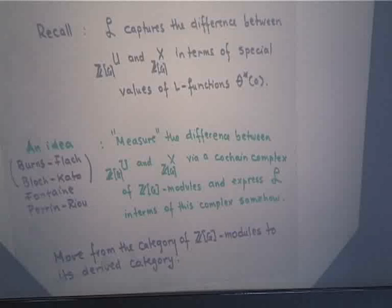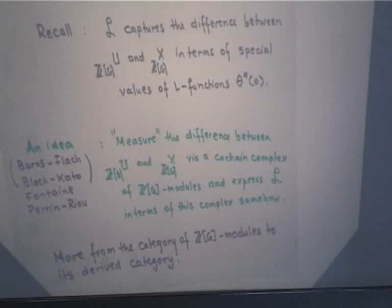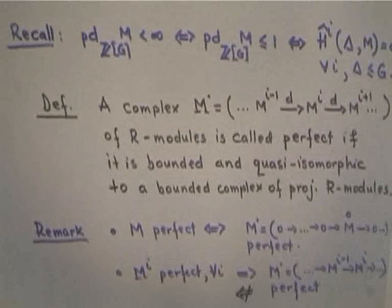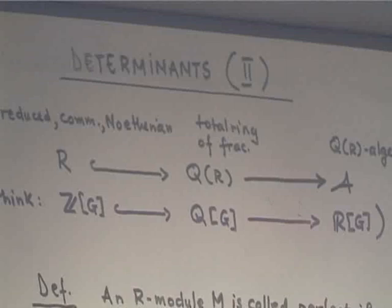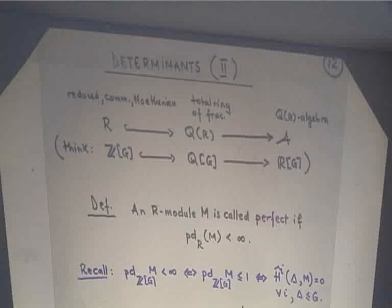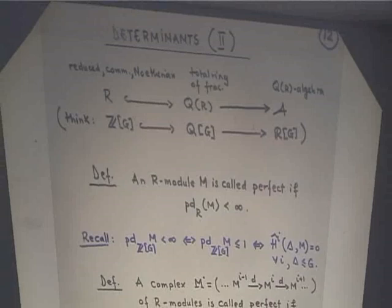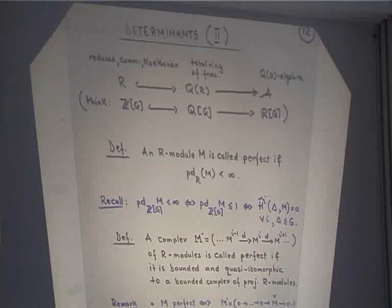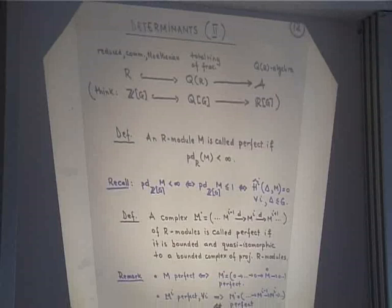What Burns and Flach are proposing in the equivariant Tamagawa number conjecture is: forget Z[G]-modules, move into the derived category and do your work there, then if you're lucky come back into the category of Z[G]-modules. To explain how this is done, I'll have to do some more determinant theory — this is the second half of my discussion about determinants.